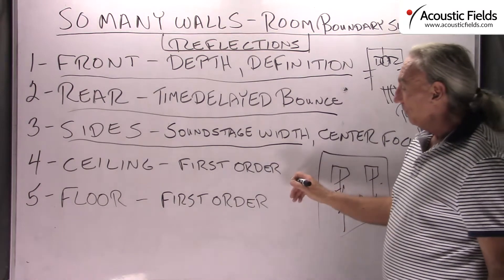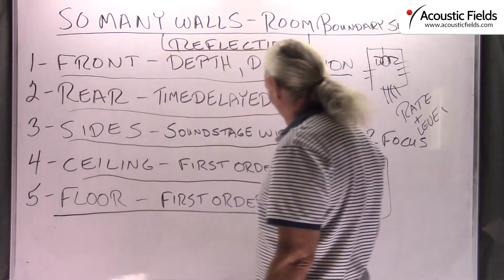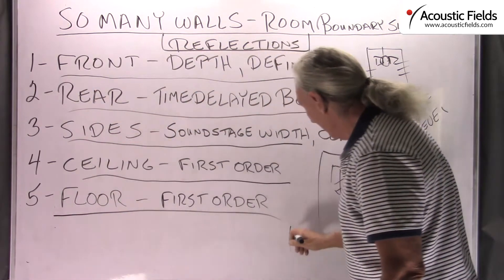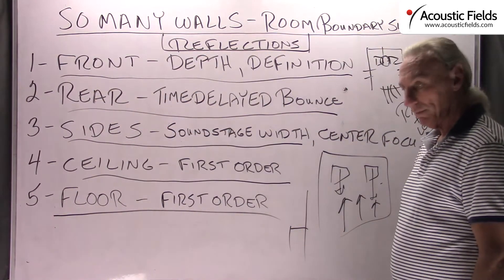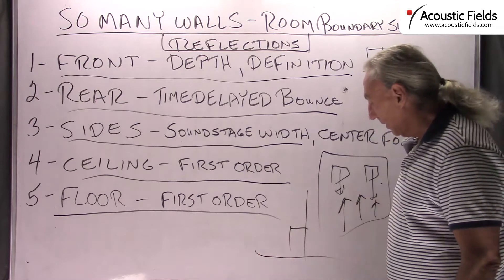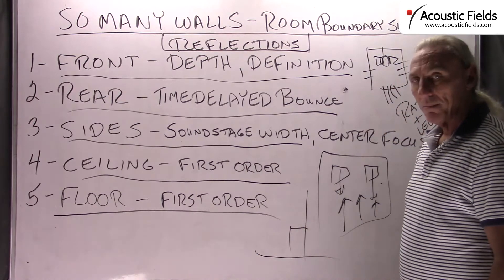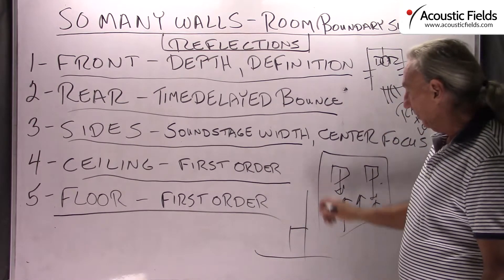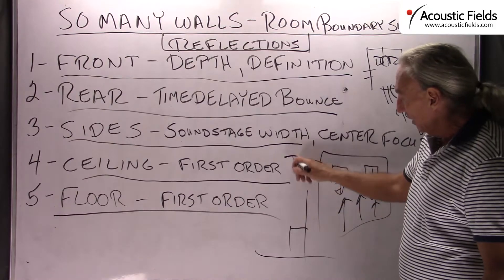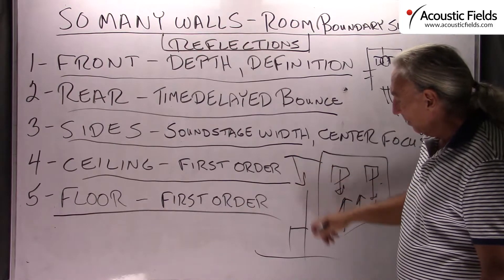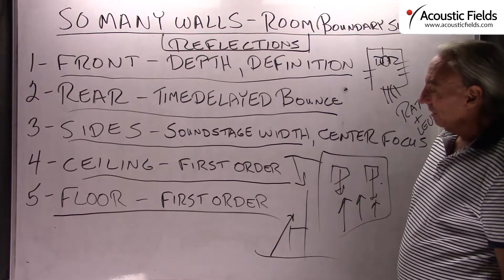Ceiling — first order reflection; and the floor — first order reflection. Why? You're sitting on the floor, and there's the floor right there. You can't really get much closer to it, and the ceiling isn't too far away up here. So those are first order reflections at the listening position.